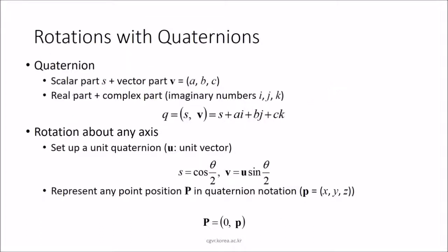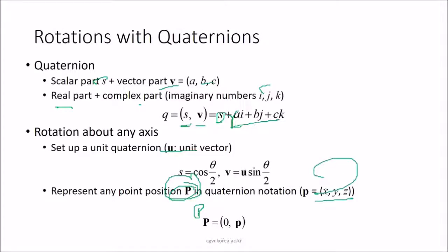Rotations with quaternions: a quaternion has a scalar part s and a vector part v = (a, b, c), represented as q = s + ai + bj + ck. For rotation about any axis, we set up a unit quaternion where s = cos(θ/2) and v = u·sin(θ/2). Any point p = (x, y, z) can be represented in quaternion form as T = (0, p).